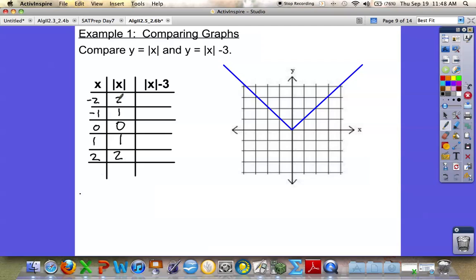But if I said the absolute value minus 3, I would have to take this absolute value and subtract 3. I would now be at negative 1. If I said 1 minus 3, I would be at negative 2. 0 minus 3 is at negative 3. 1 minus 3 is at negative 2. And 2 minus 3 is at negative 1. So my new graph would have points at negative 2 negative 1, negative 1 negative 2, 0 negative 3, 1 negative 2, and 2 negative 1. And if I connected these points, you can see that this graph just moved down 1, 2, 3 units.